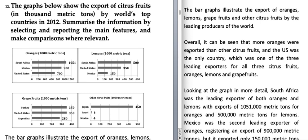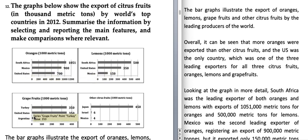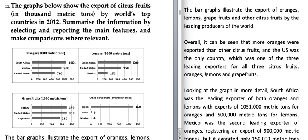Then comes the overview, which begins with the word 'overall.' Overall, it can be seen that more oranges were exported than other citrus fruits, and the US was the only country which was one of the three leading exporters for all three citrus fruits — oranges, lemons, and grapefruits. You can see that other countries are not present in all three graphs, whereas the US appears in oranges, lemons, and grapefruits.